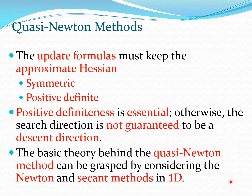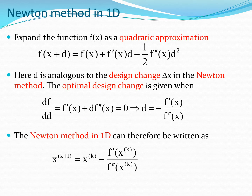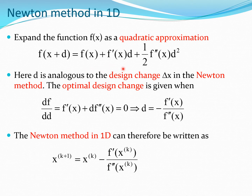The basic theory behind the quasi-Newton method can be grasped by considering the relationship between Newton's method and the secant method, which becomes clear if we look at the one-dimensional problem. We recreate Newton's method in one dimension by expanding the function f(x) as a quadratic approximation using the Taylor series expansion of f(x + d), which includes the first derivative term and the second derivative term.